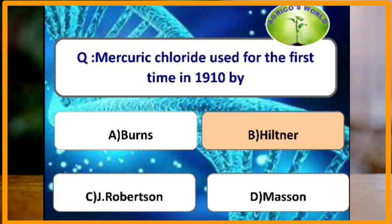Mercuric chloride was used for the first time in the year 1920 by which scientist? Mercuric chloride was first used by the scientist Hiltner.